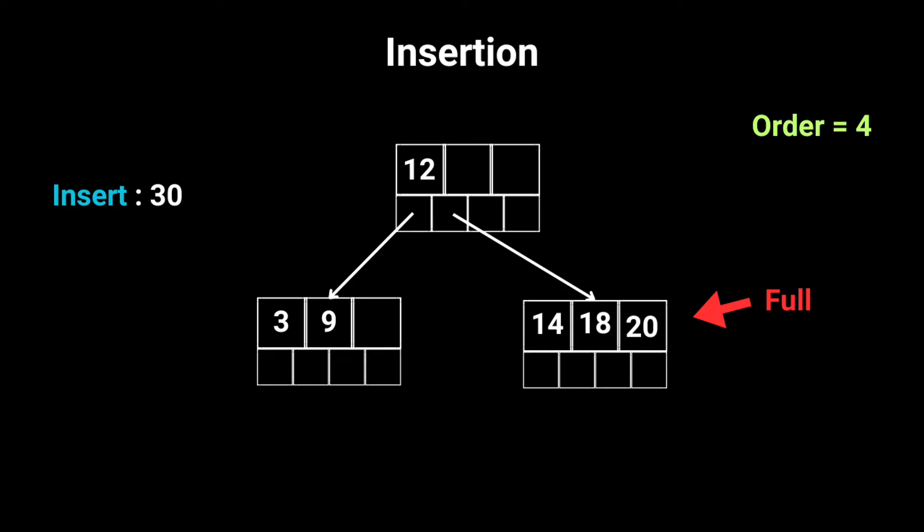We create a new node. How? Well, we have the keys 14, 18, 20, and 30, and we split them in the middle.